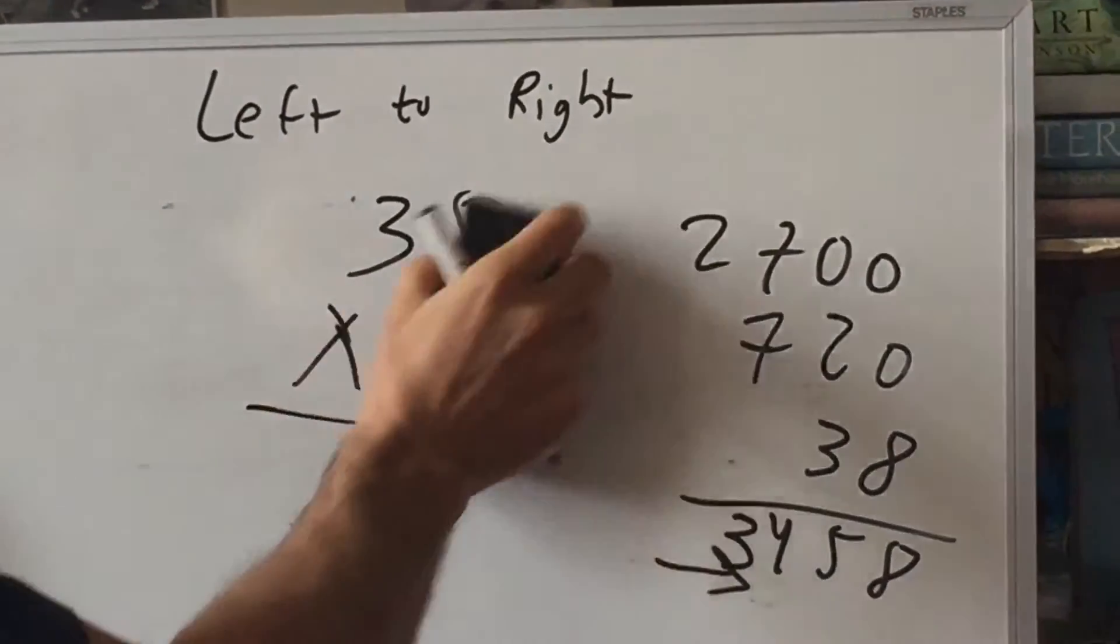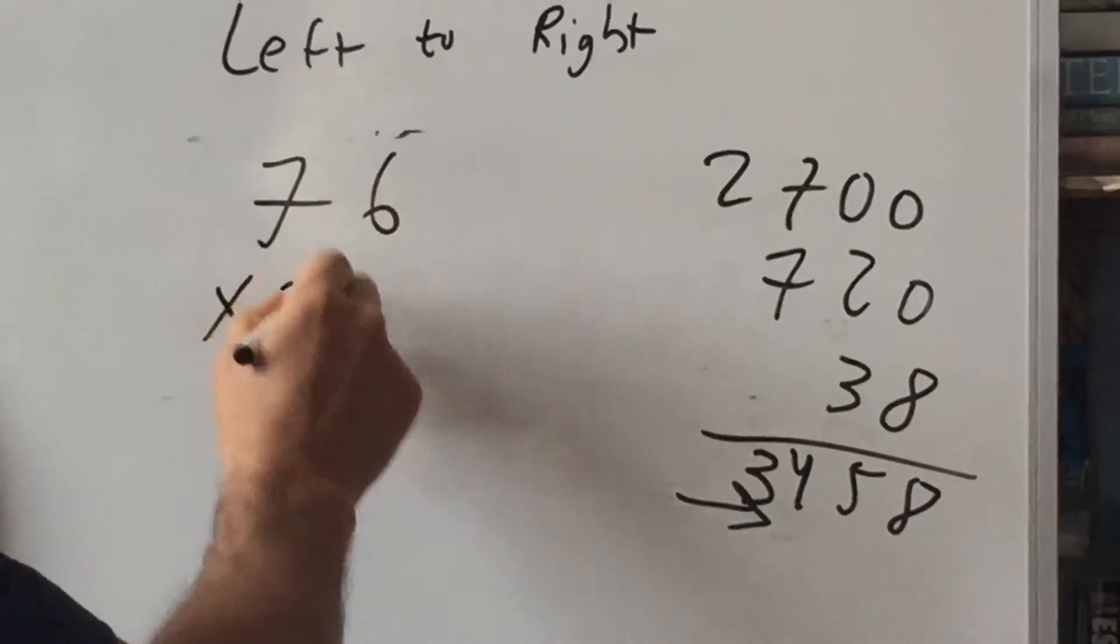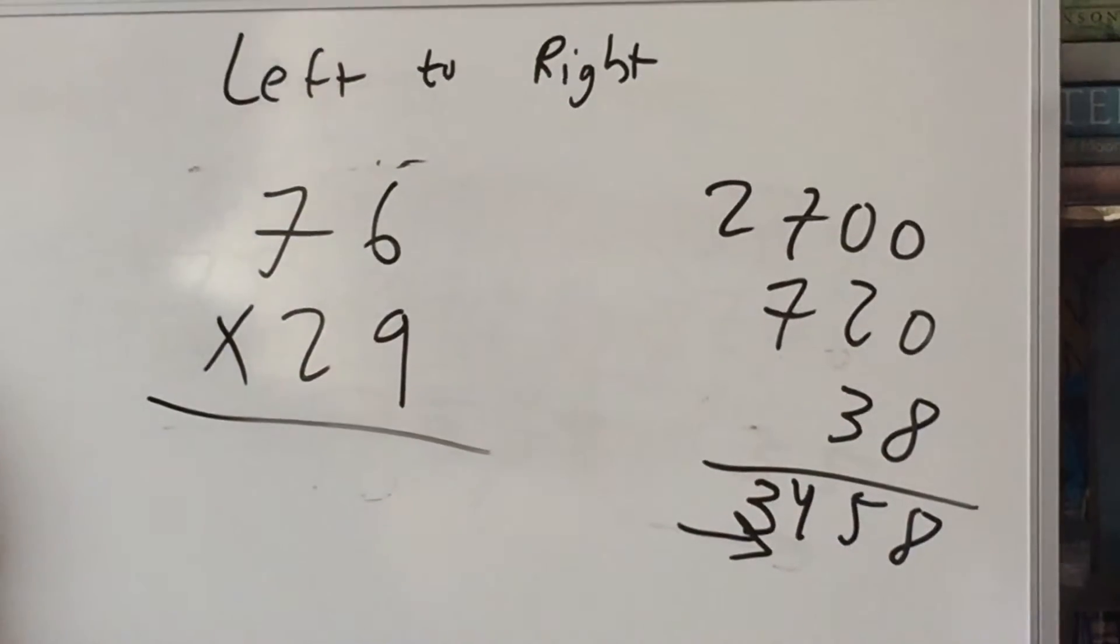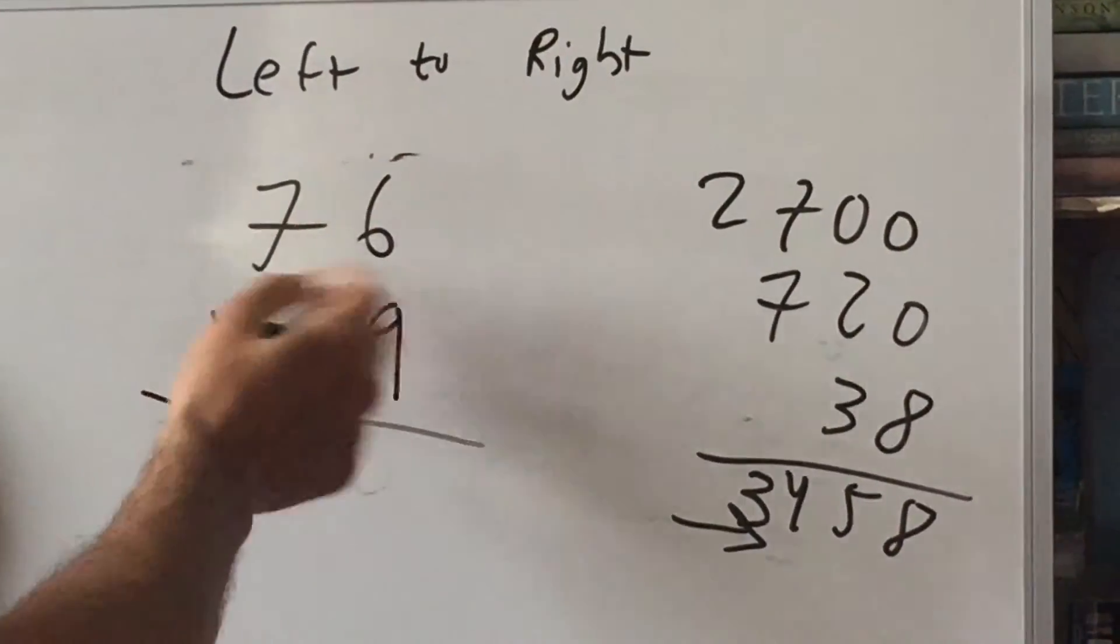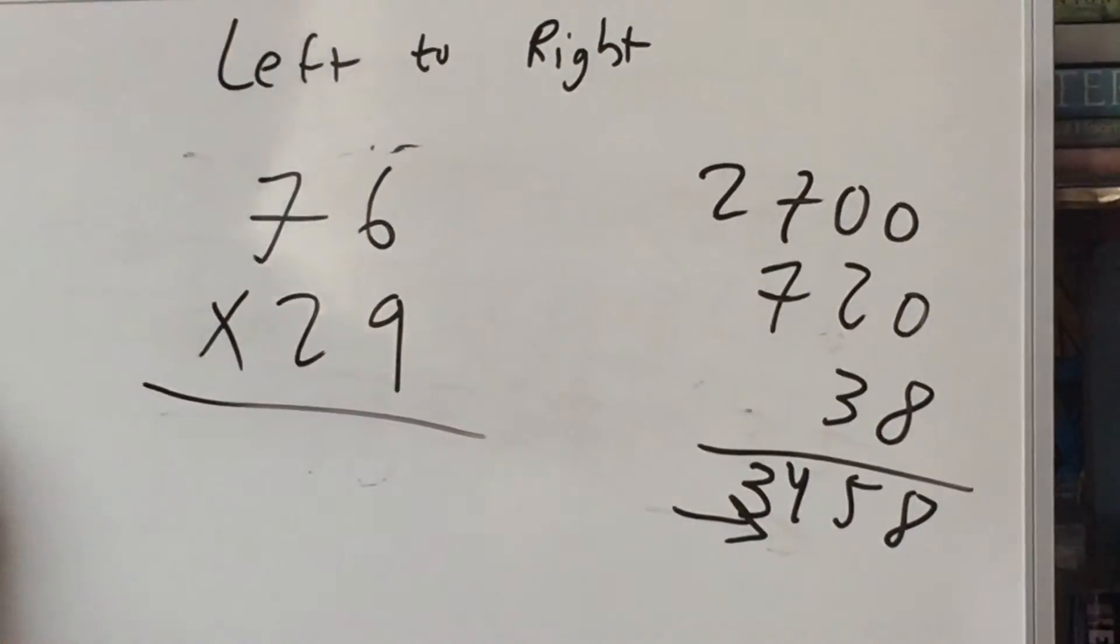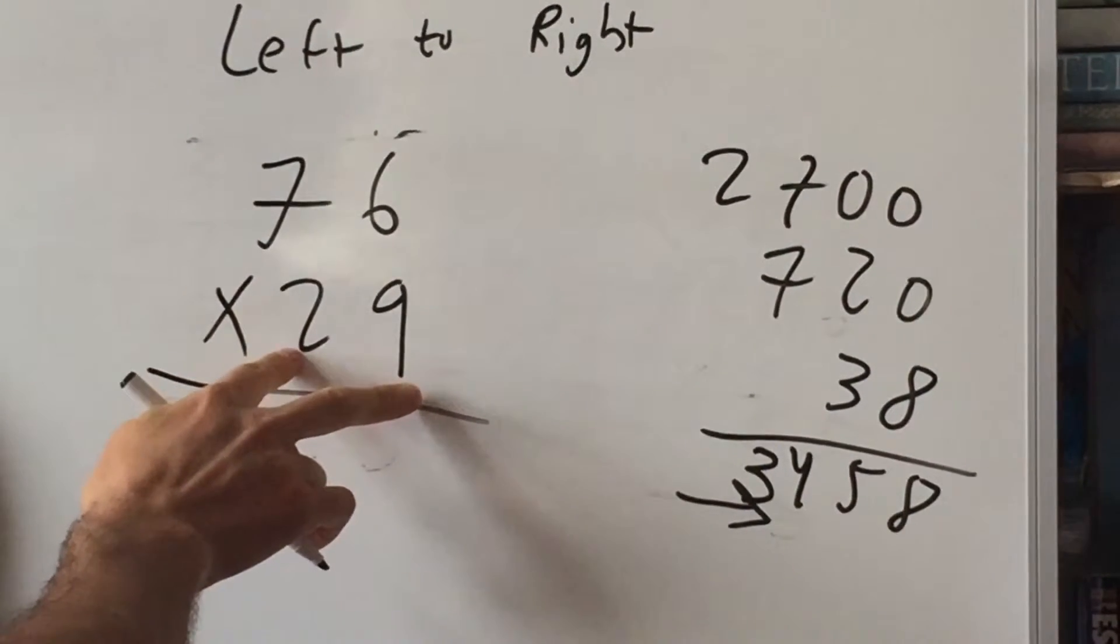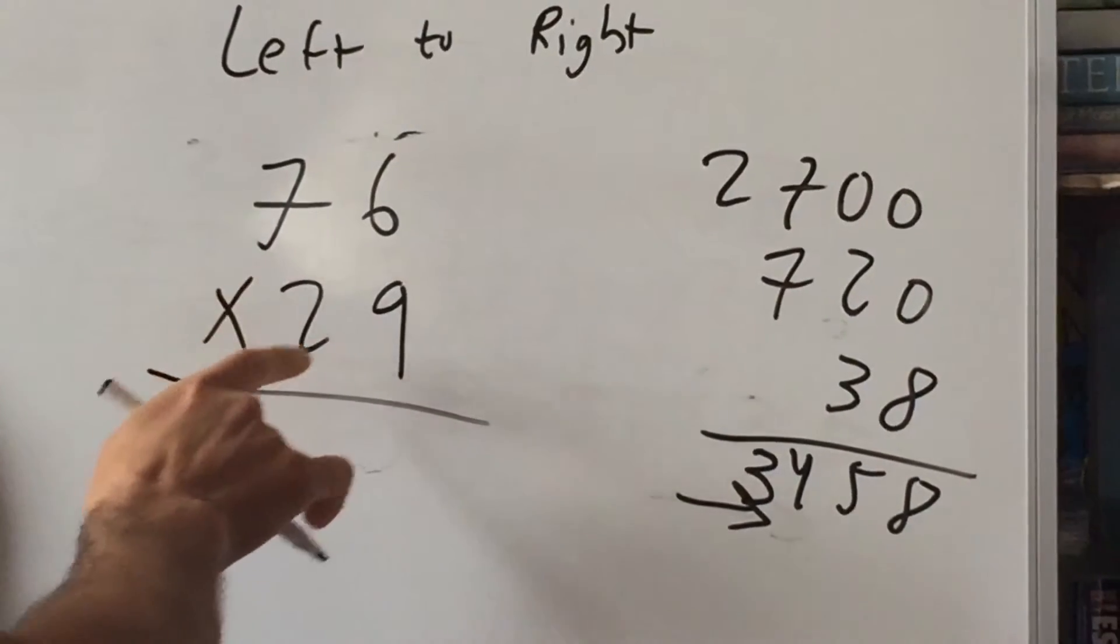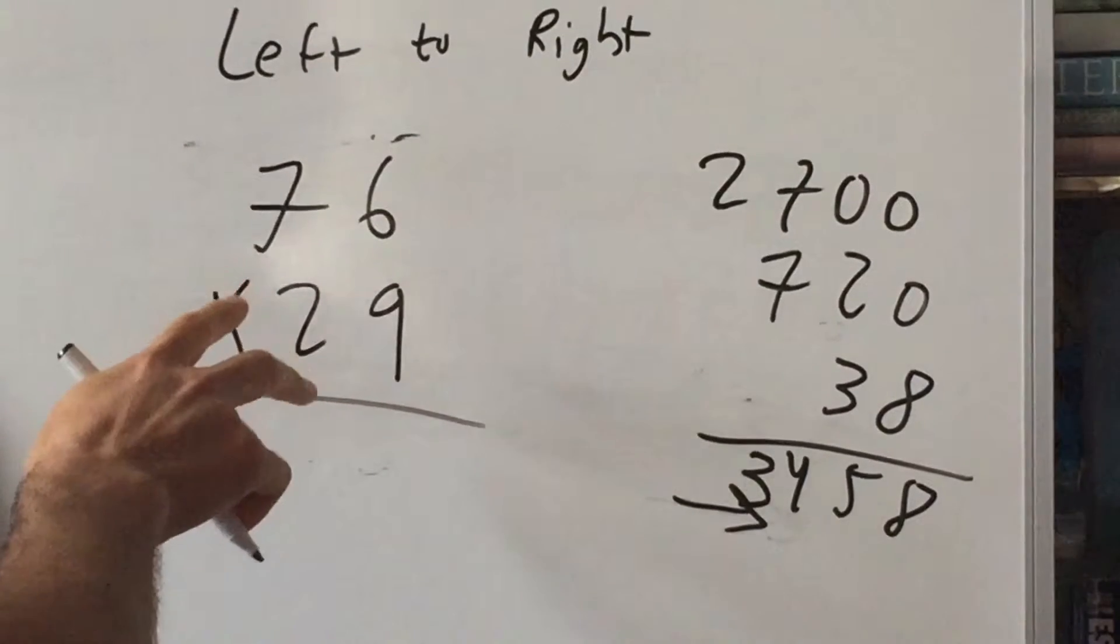So let's take another one, seventy six times twenty nine. All right so we look at it for a second, maybe we want to do the two, the seventy six, I'll take the seven with the twenty nine. If you think about it you'll come to your own choices. All right so seventy times twenty is fourteen hundred.